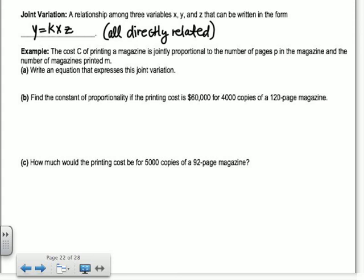So it says the cost c of printing a magazine is jointly proportional to the number of pages p in the magazine and the number of magazines printed m. Write an equation that expresses this joint variation. So it's jointly related, so c is jointly related. So you always have a constant, so k times p times m. So find the constant if the cost is $60,000 for 4,000 copies of a 120-page magazine. So that's my p and this is my m.